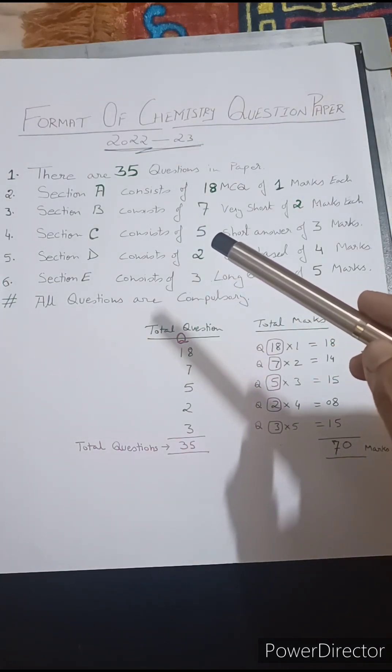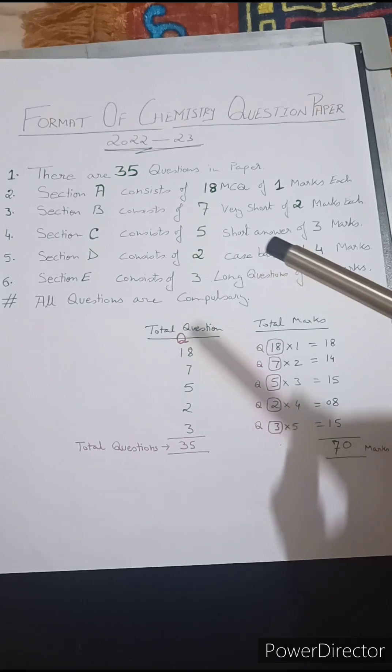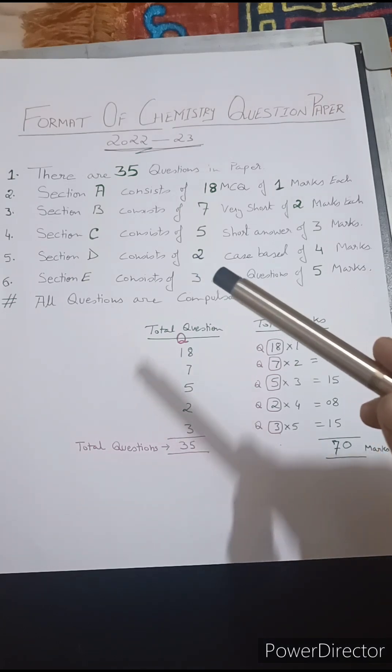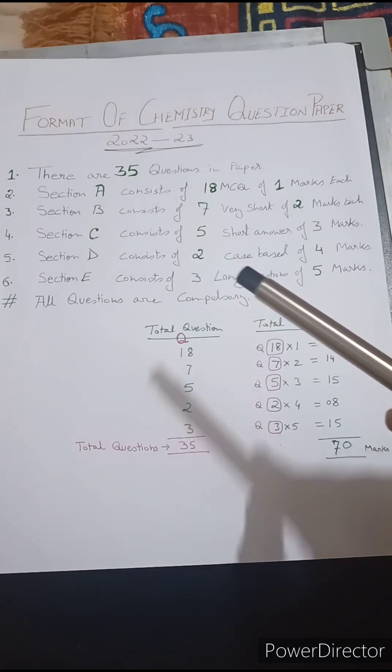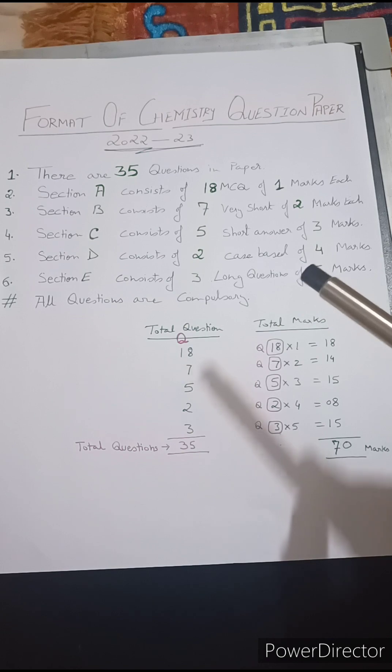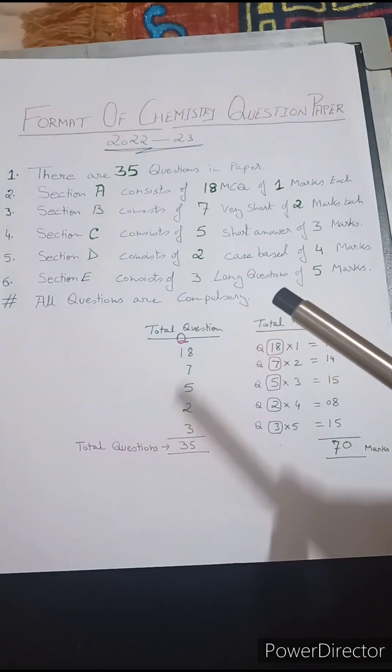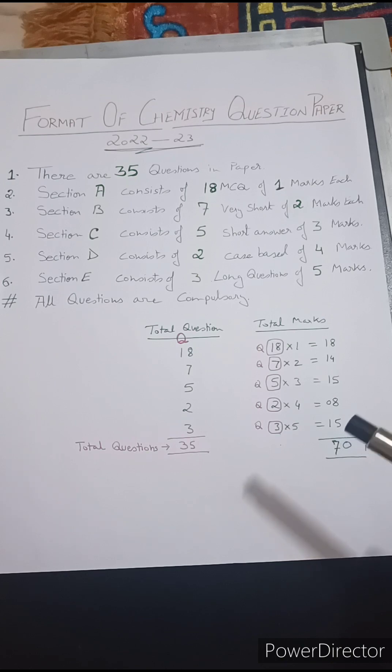Section C consisting of 5 short answer type questions of 3 marks each, that means 15 marks. And Section D consisting of 2 case based questions of 4 marks each, which means total of 8 marks. And Section E consisting of 3 long questions of 5 marks each, totaling 15 marks.